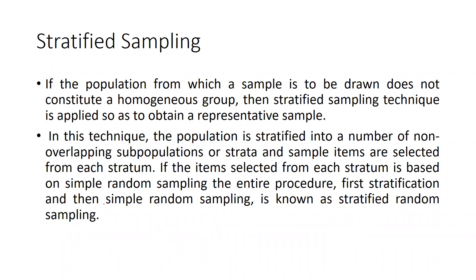When the population does not constitute a homogeneous group, stratified sampling is applied to obtain a representative sample. For example, in a class, some students scored above 80%, some between 60% to 80%, and some below 60%. These students are divided into three categories called strata. From each stratum, 10 students are selected — 10 from above 80%, 10 from 60–80%, and 10 from below 60%.